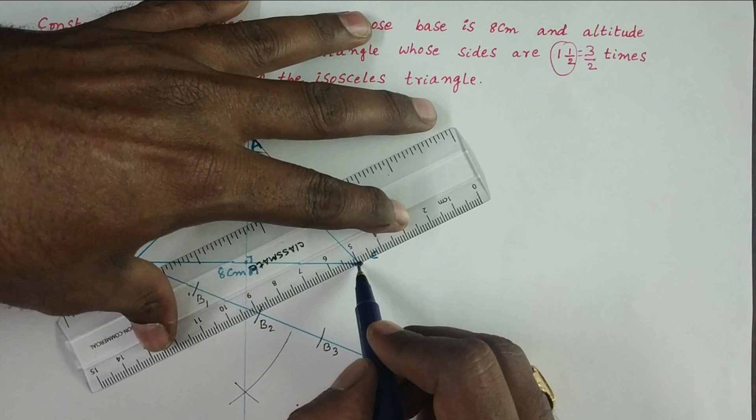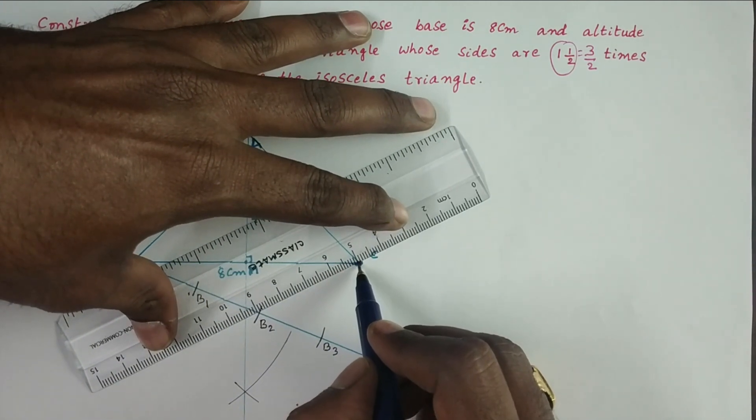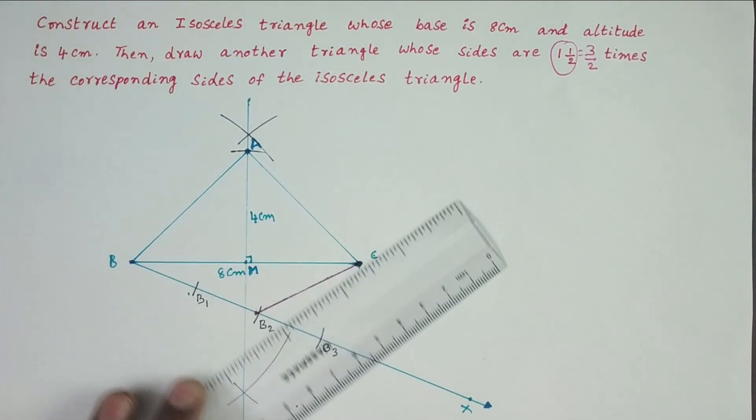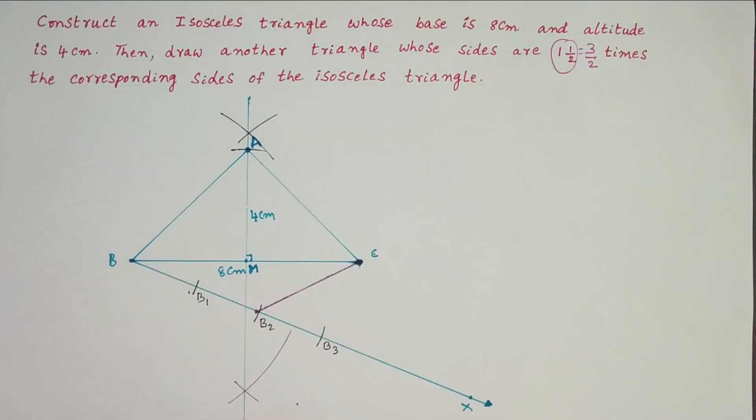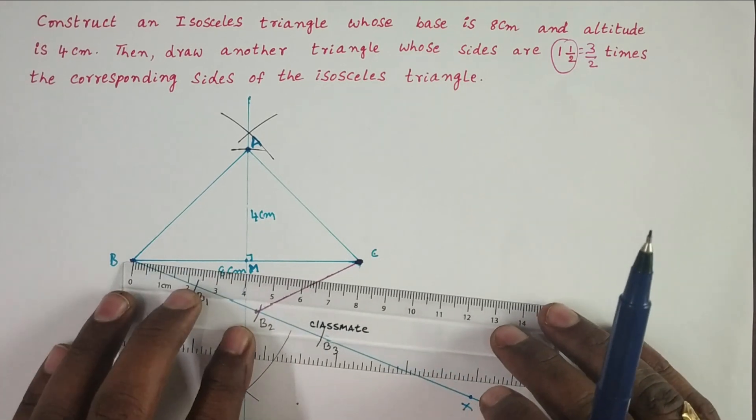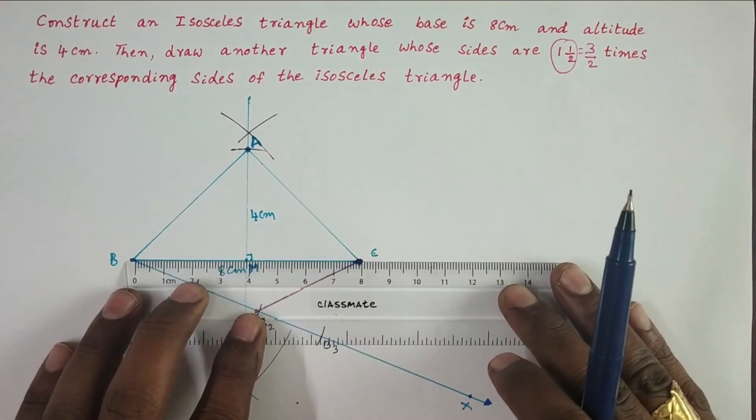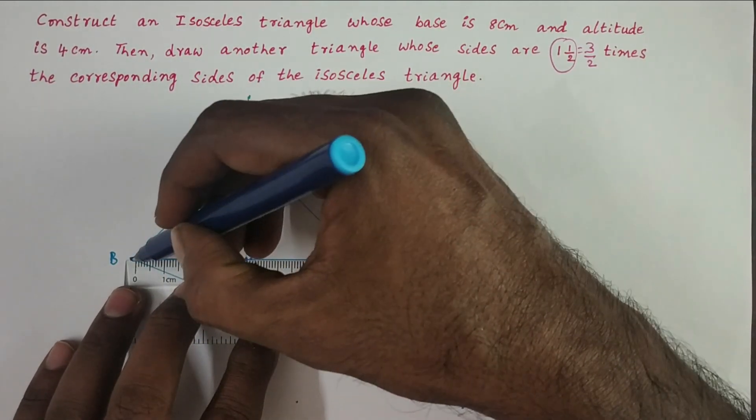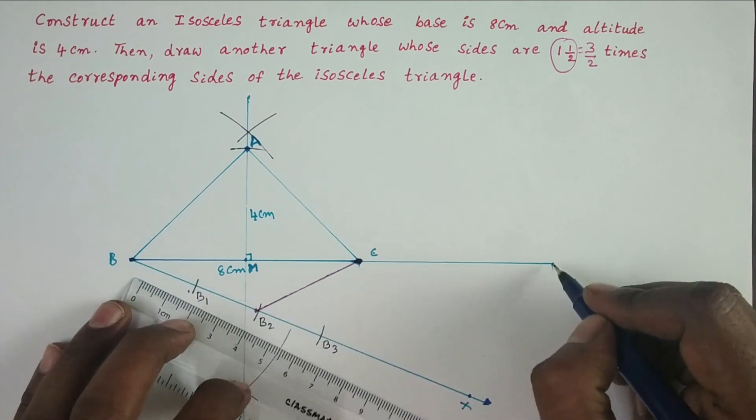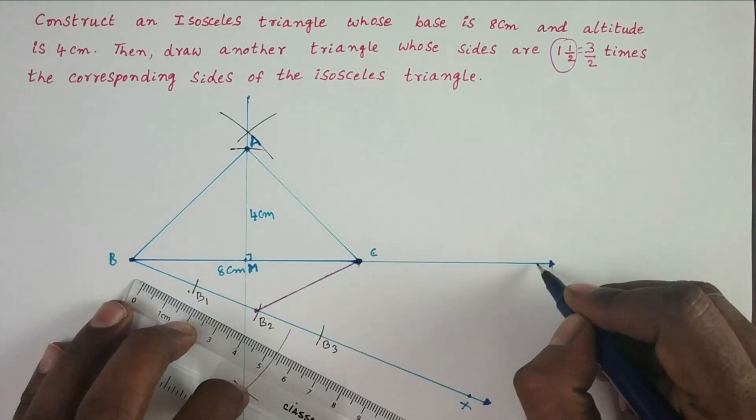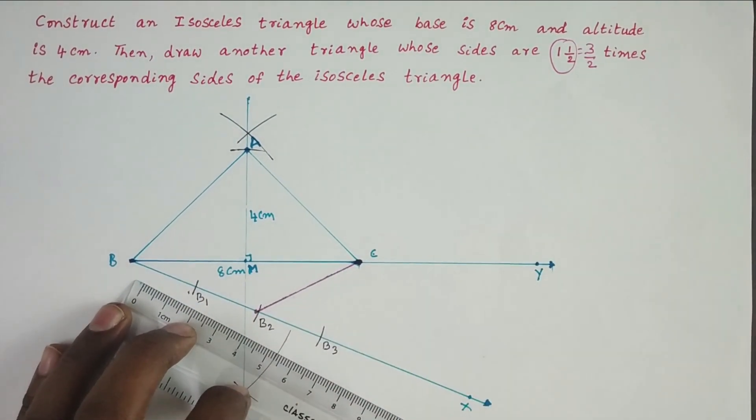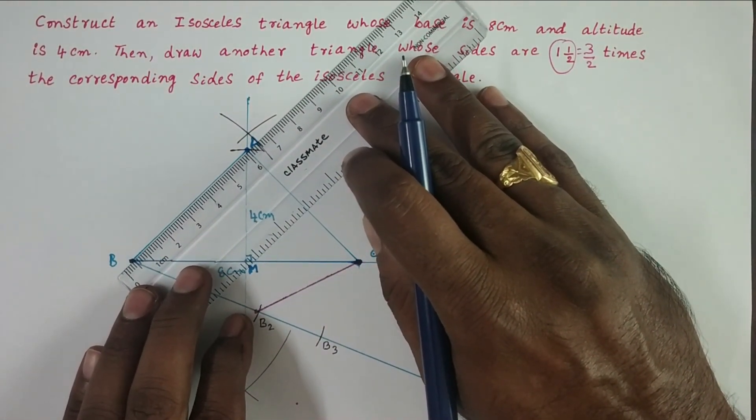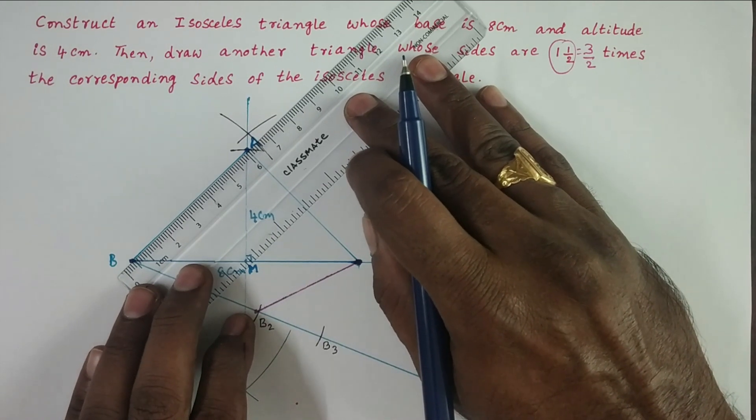According to the problem, the given triangle has only two parts. That's why we join B2C. We have to construct three parts. Produce the side BC to Y and also produce the side BA to Z.